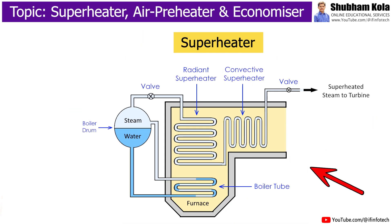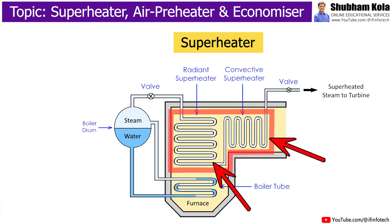The superheater consists of groups of tubes made of steel. The metal tubes used for the superheater must have high temperature strength, high creep strength, and high resistance to oxidation.